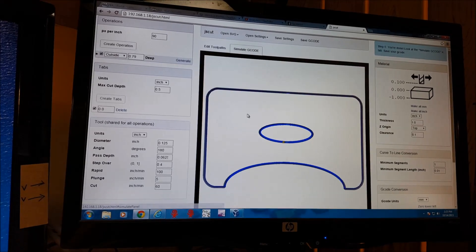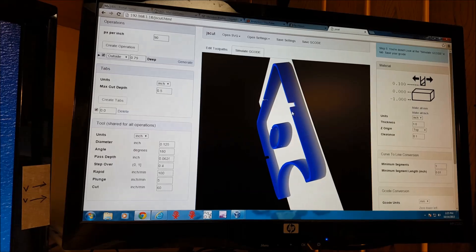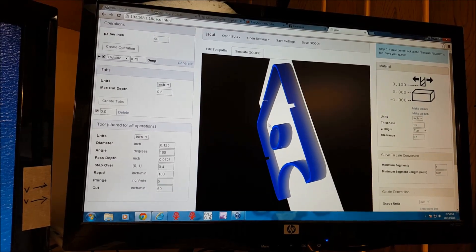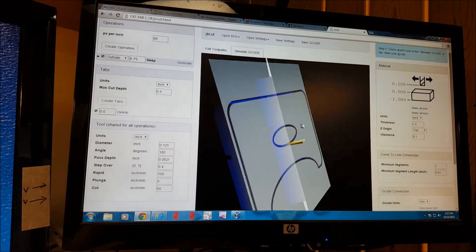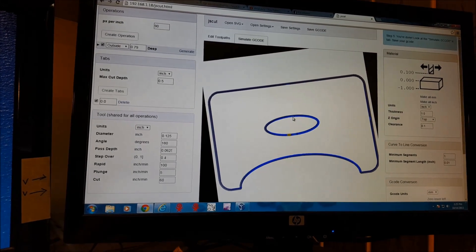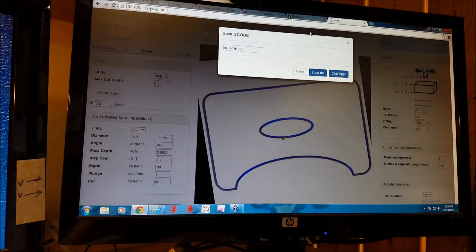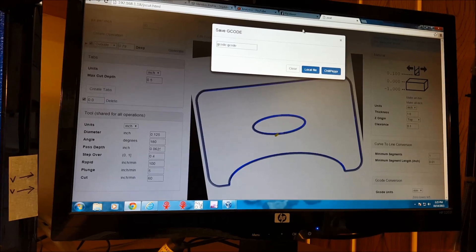And we can see what this looks like. Here's our simulation. Here's our tab cuts. And that's our front piece. You can see the tabs in here too. And we save our code and open it up in MOP.